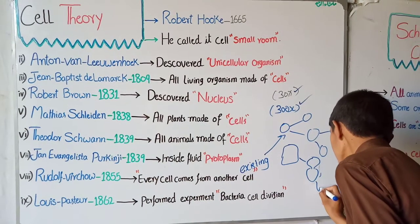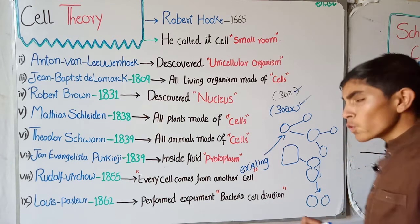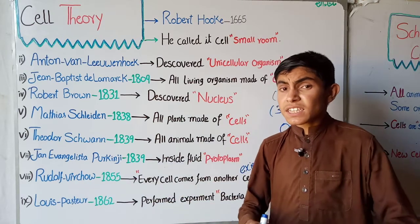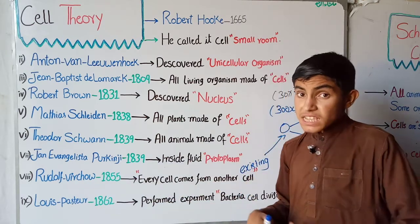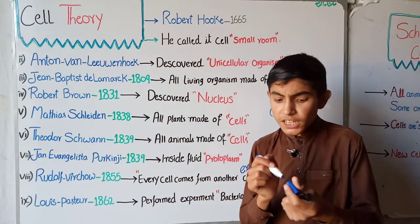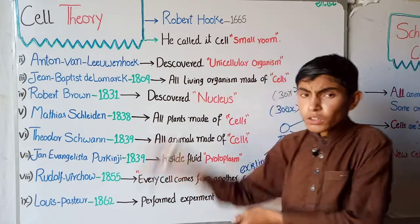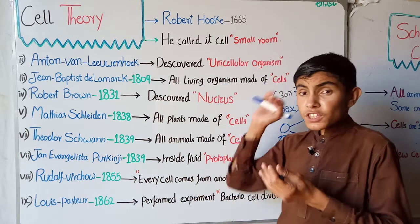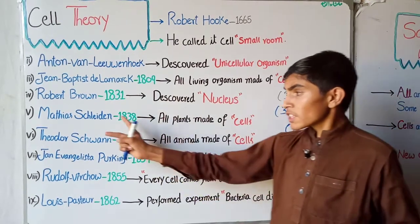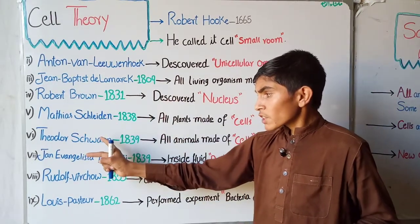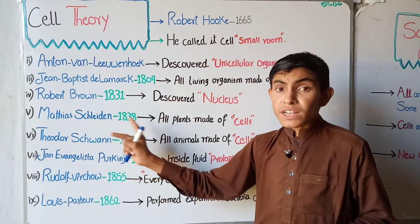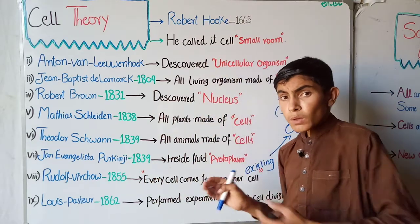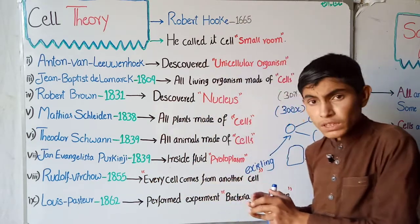Eventually the bacterial cell gave rise to two cells. So Pasteur performed this experiment and proved the theory of Virchow — that a cell undergoes cell division and therefore gives rise to more cells. This concluded the study of the different theories proposed by various scientists. Now we will talk about the conclusion drawn from these theories, given by two scientists — Schleiden and Schwann.